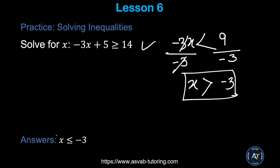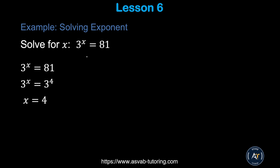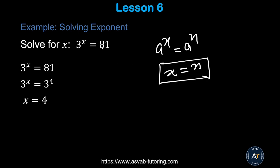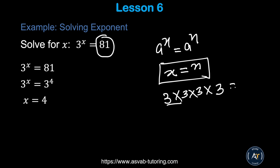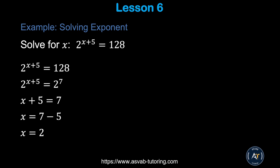Now let's learn exponential equations. The key rule is: if a^x = a^n, then x = n. For example, 3^x = 81 — rewrite 81 as 3 × 3 × 3 × 3 = 3⁴. Applying the rule, 3^x = 3⁴ means x = 4.